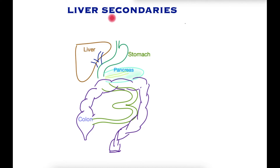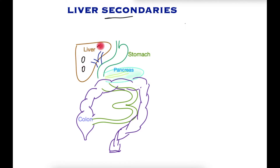Liver secondaries or liver metastases denote cancer that has spread to the liver, so that you get cancer deposits in the liver that have originated at other sites within the body.